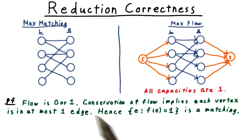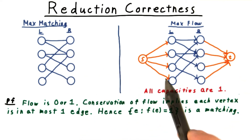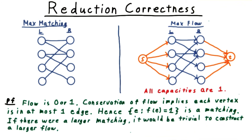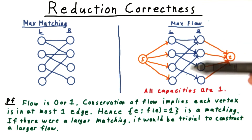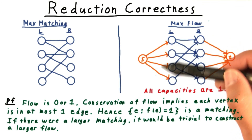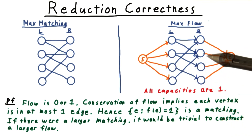This means that the set of edges in the original graph that have flow 1 in the flow network constitute a matching. Is it a maximum matching? Well, if there were a larger matching, it would be trivial to construct a larger flow — just give those edges flow 1 and connect them with flow values of 1 to the source, and on the right with flow values of 1 to the sink. So yes, it must be a maximum matching.